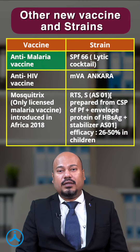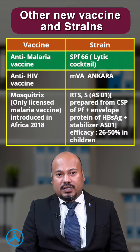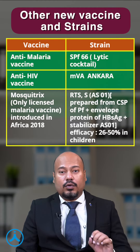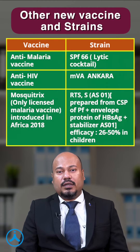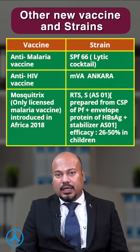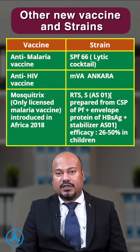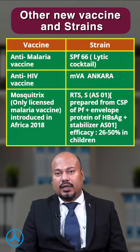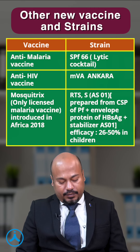The anti-malaria vaccine uses the SPF 66 cocktail. Mosquirix is the vaccine against malaria; it is prepared from the circumsporozoite protein of Plasmodium falciparum, plus the hepatitis B surface antigen protein, plus a stabilizer AS01. Its efficacy is 25–50% in children.